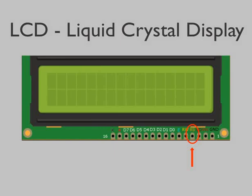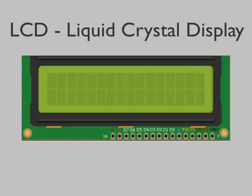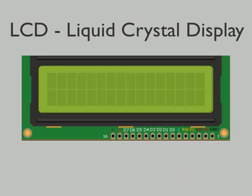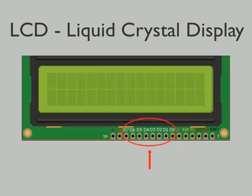RS stands for Register Select. It can be used as a command register or a data register. The command register is used for placing the command to be displayed, and the data register is used to place the data. RW is a read-write pin — we can either read data from the LCD or write to it. E represents the enable pin, which enables the LCD to accept information. These are data pins through which data and commands are sent to the LCD.